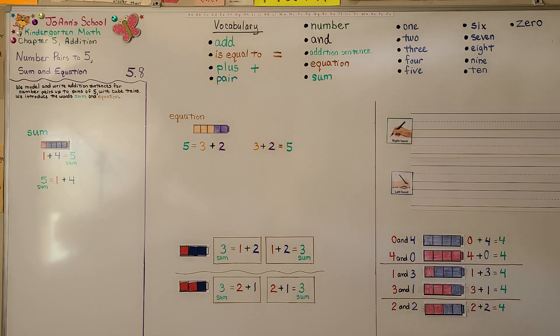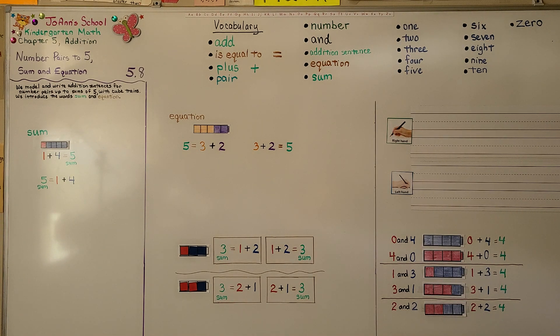Our next lesson is 5.9 — we're going to talk about number pairs for 6 and 7. I hope you'll join me, and I hope you have a great day. Bye!